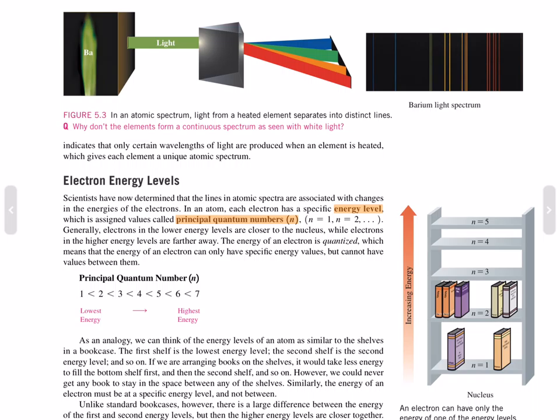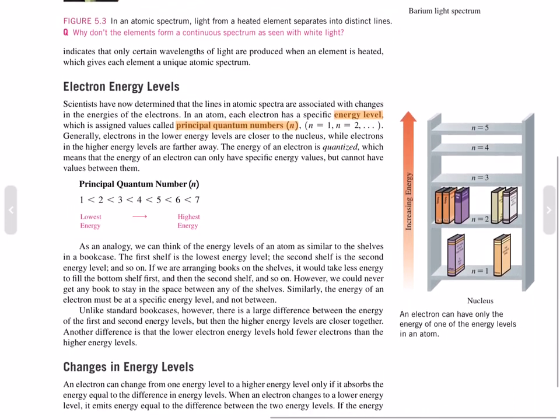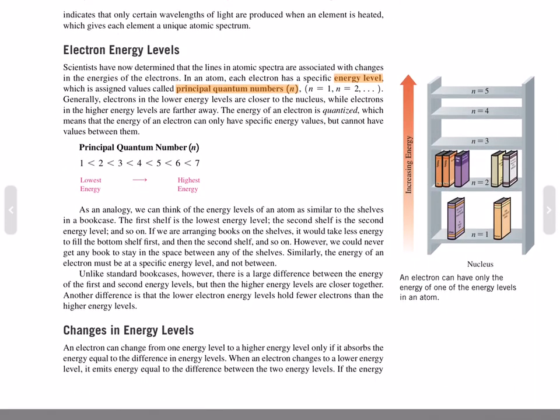Electron energy levels. Scientists have now determined that the lines in atomic spectra are associated with changes in the energies of electrons. In an atom, each electron has a specific energy level which is assigned values called principal quantum numbers, n, where n equals 1, 2, 3, and so on.